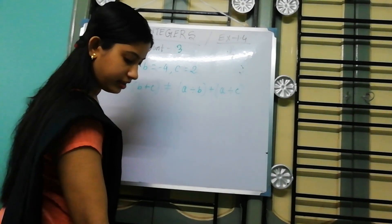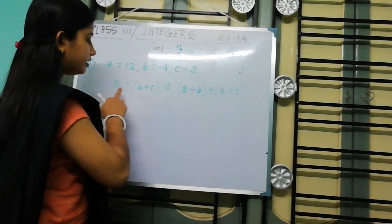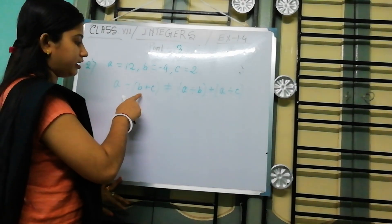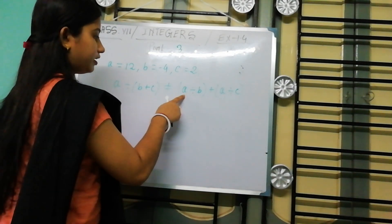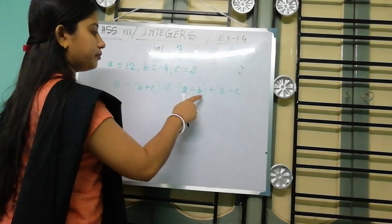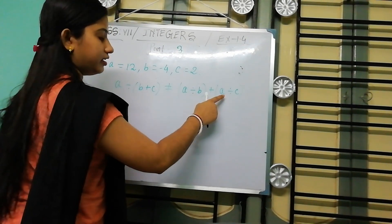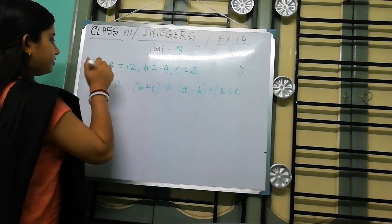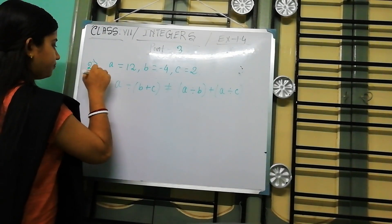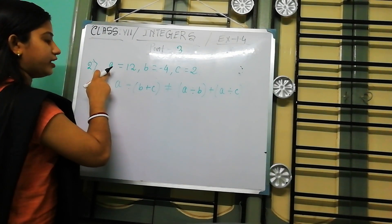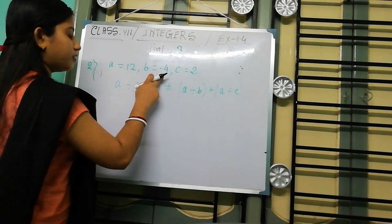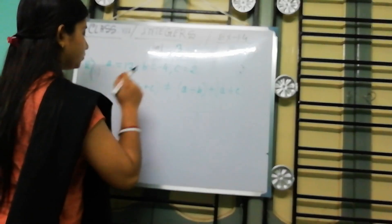Here is given an equation: verify that A divided by (B plus C) is not equal to A divided by B plus A divided by C. Now the given values are: A equals 12, B equals minus 4, and C equals 2.